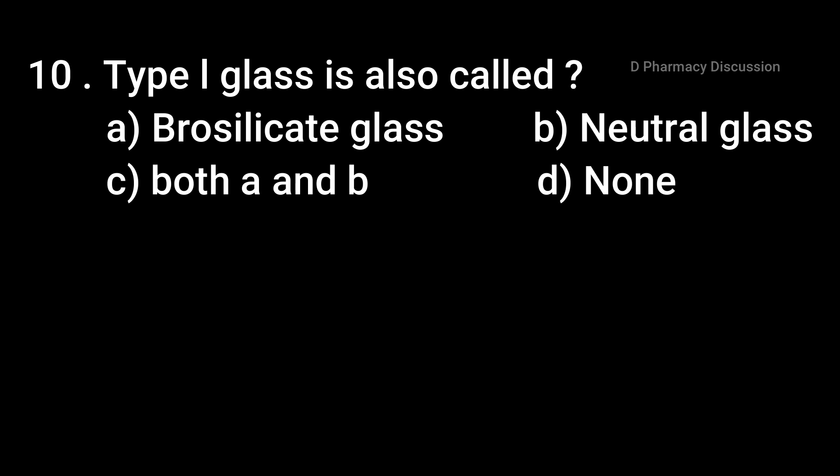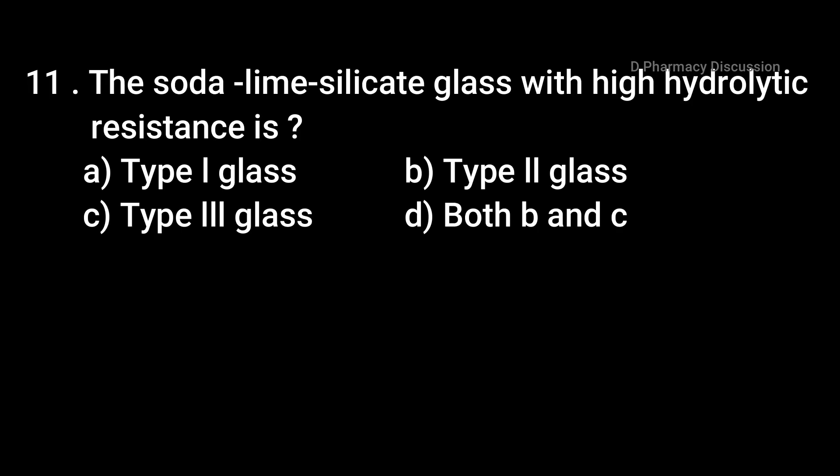Question 10: Type one glass is also called. Option A: borosilicate glass, B: neutral glass, C: both A and B, and Option D: none. Correct answer is Option C, both A and B — borosilicate glass and neutral glass are both called type one glass. Question 11: The soda lime silicate glass with high hydrolytic resistance is. Option A: type one glass, B: type two glass, C: type three glass, Option D: both B and C. Correct answer is Option B, type two glass.